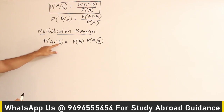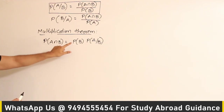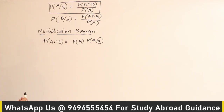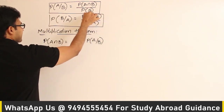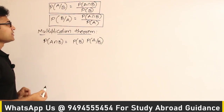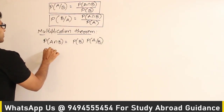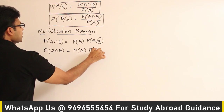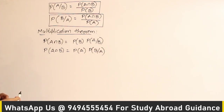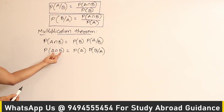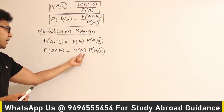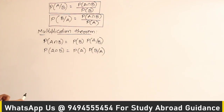What does it mean? The probability that two events A and B happen is equal to the probability of B happening, multiplied by the probability of A happening given that B has already happened. Similarly, taking the other formula and multiplying both sides with P of A, we get P of A intersection B equals P of A into P of B given A. This means the probability of A and B happening simultaneously equals the probability of A happening first, then the probability of B happening given that A has happened.